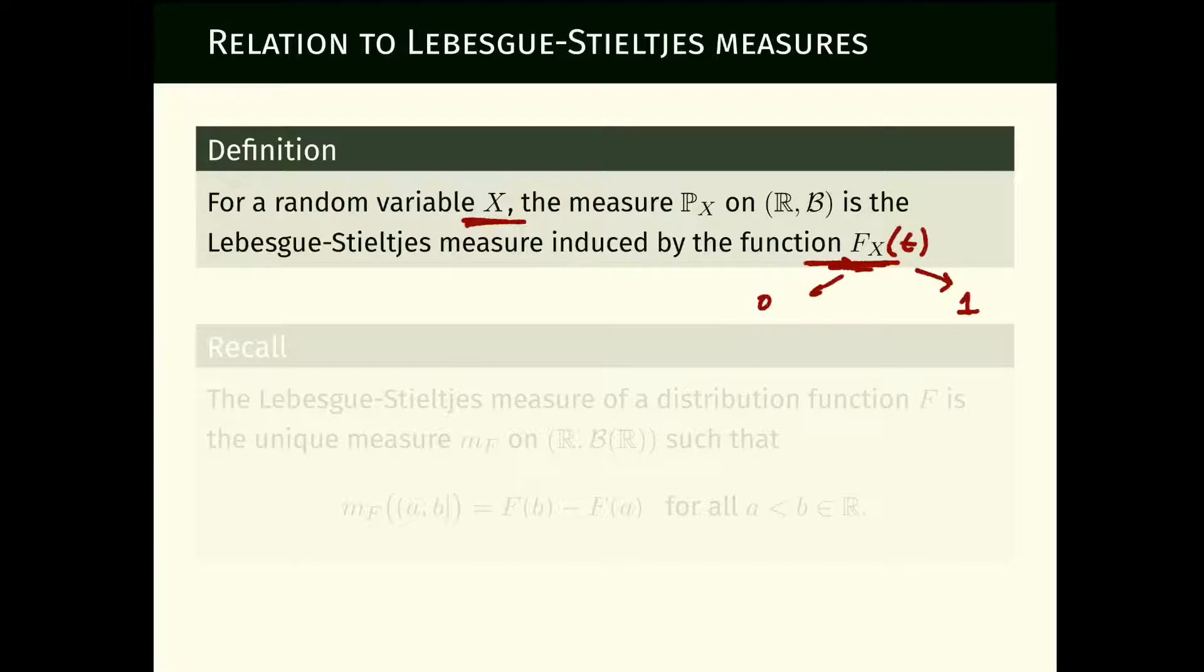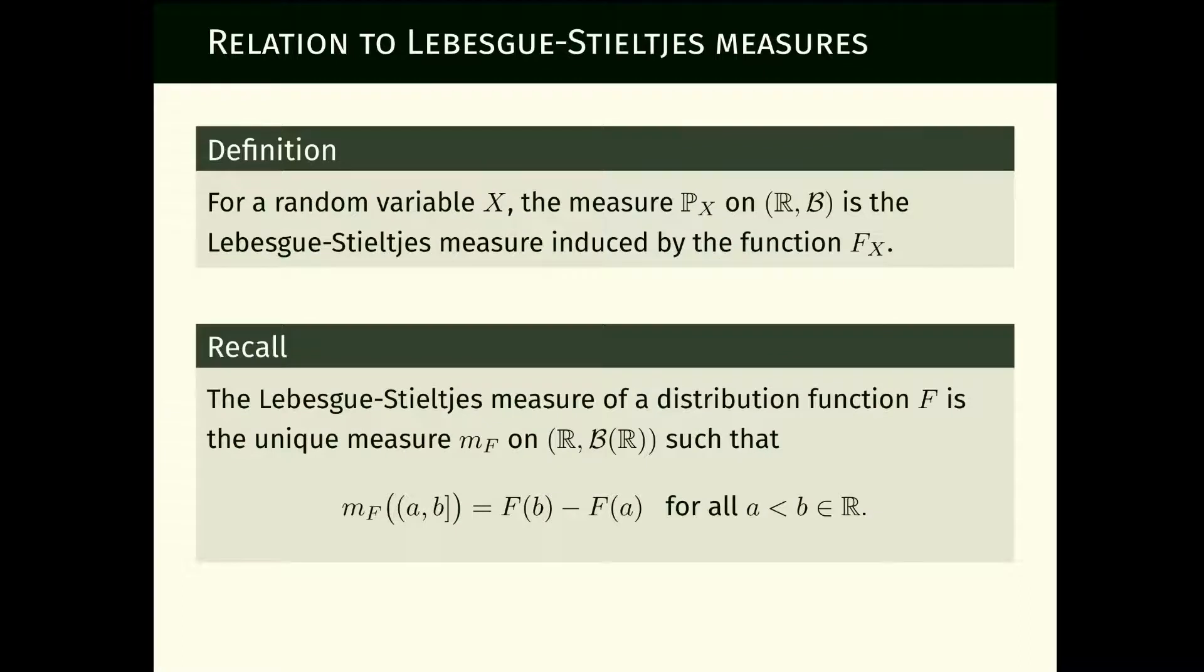In that case, since we are on the real line, this probability measure is actually the Lebesgue-Stieltjes measure that is induced by its cumulative distribution function, connecting to Lebesgue-Stieltjes from week two. The Lebesgue-Stieltjes measure assigns to intervals open on the left and closed on the right the measure capital F evaluated at B minus capital F evaluated at A.